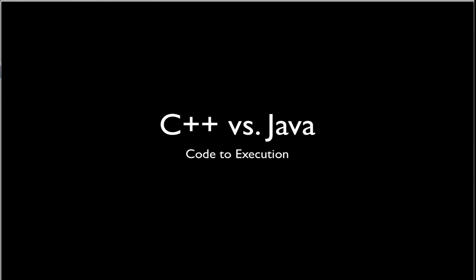We want to spend a little time talking about the differences between C++ and Java in terms of how we go from source code to creation of an executable and running. We want to talk about portability, as Java is described to be very portable, and we want to get an understanding of what that means.